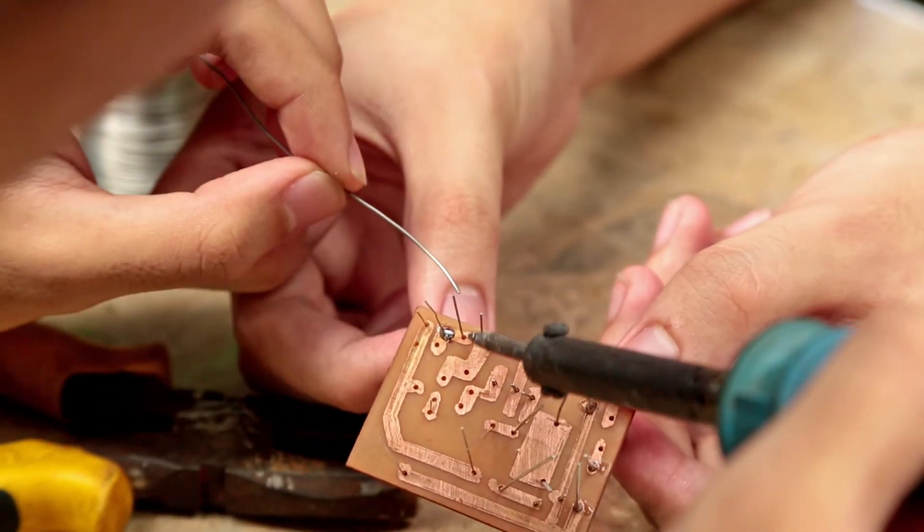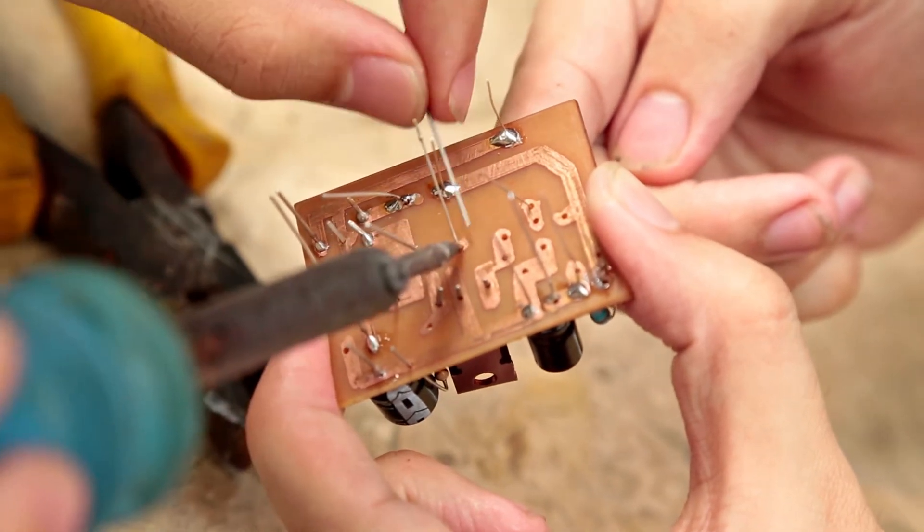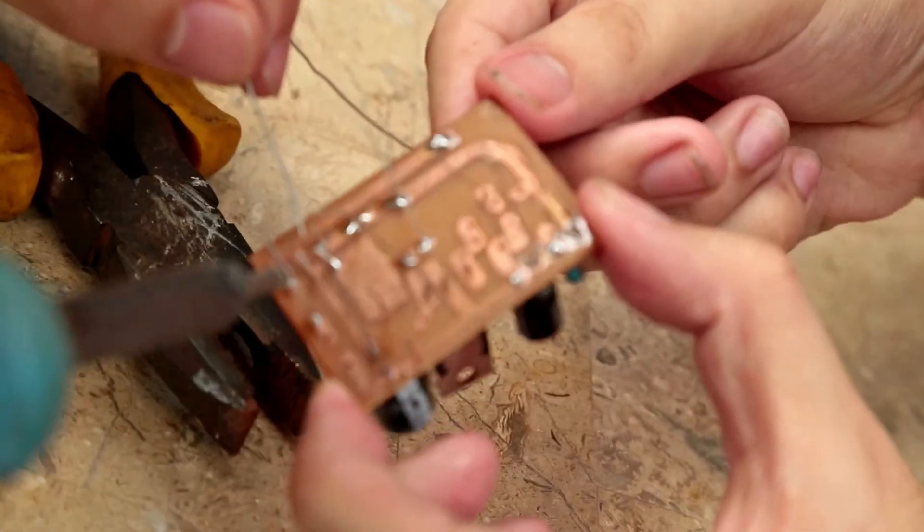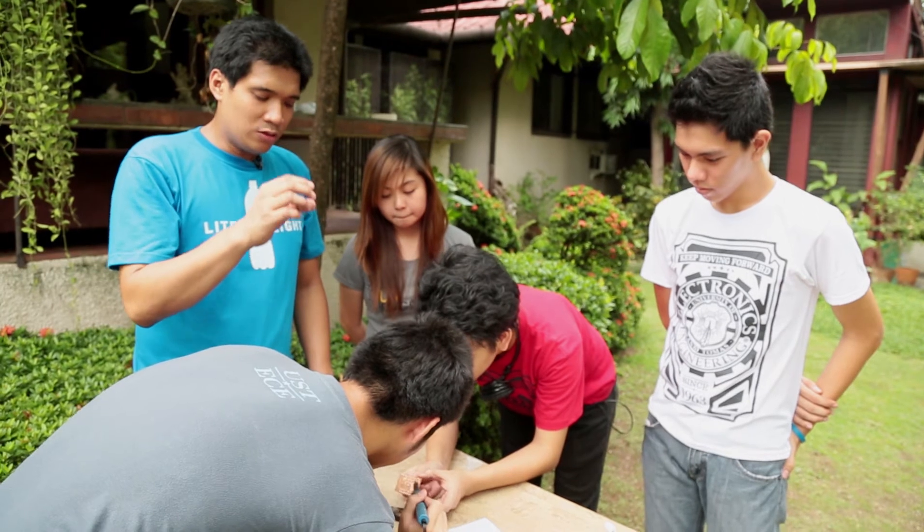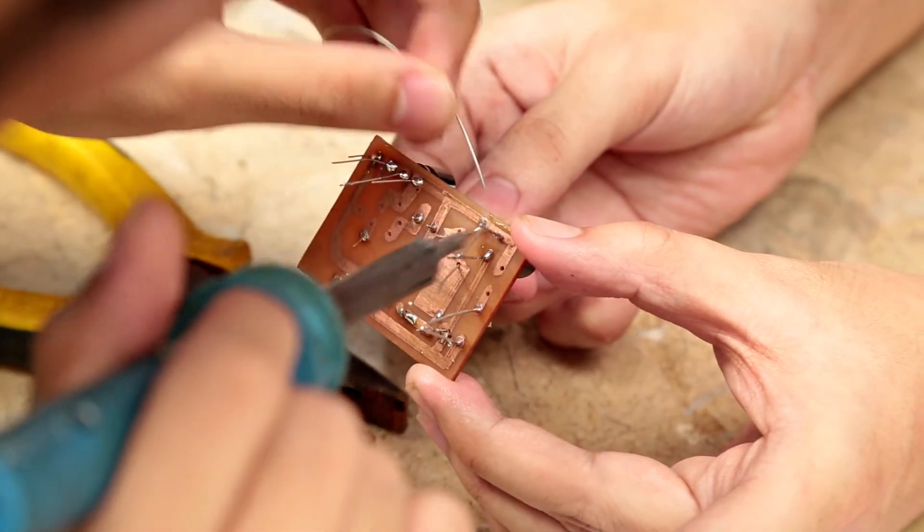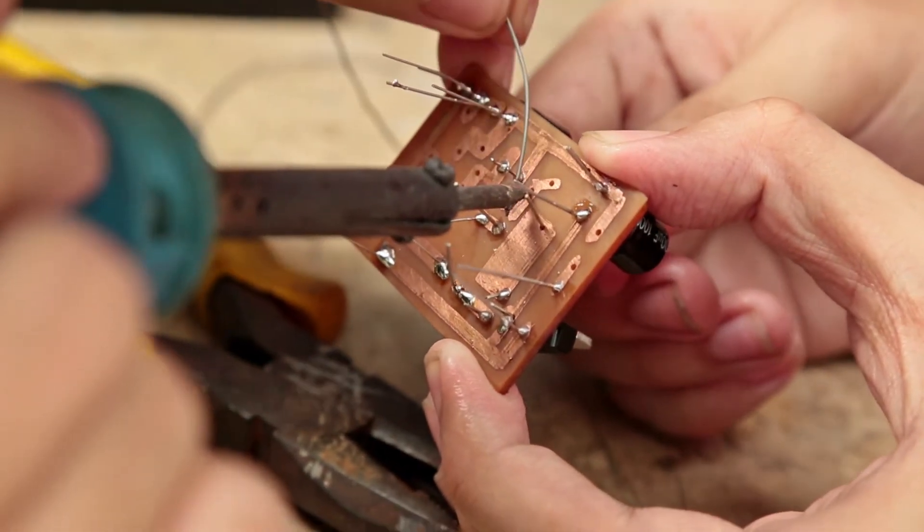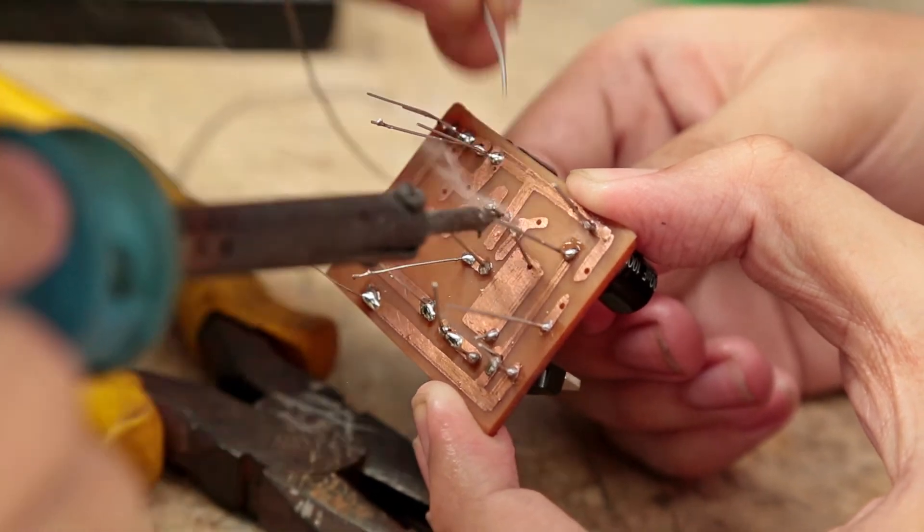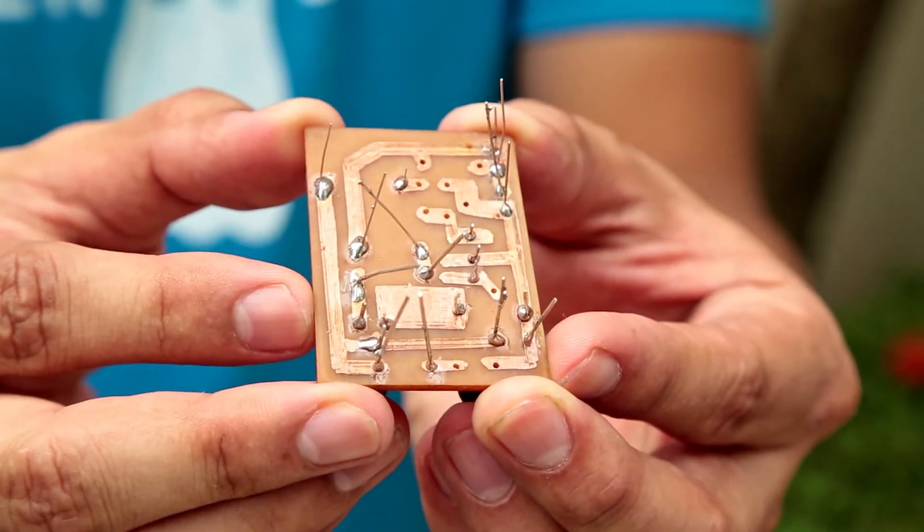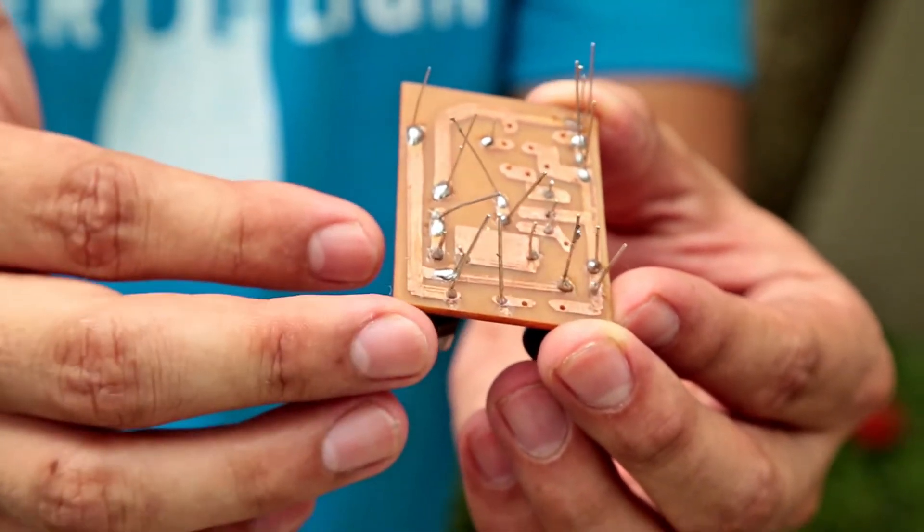When soldering components such as transistors or regulators, they are more heat sensitive than resistors and capacitors. Don't spend too much time heating the component because it will damage it permanently. Be cautious when putting lead as well because you don't want it to spread to other copper lines—that would create a short circuit damaging the components.